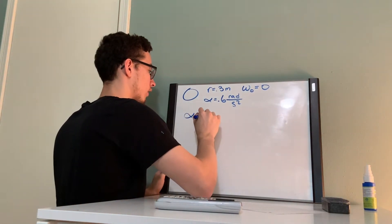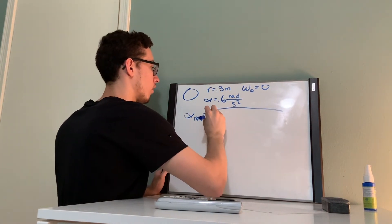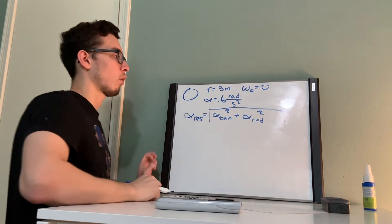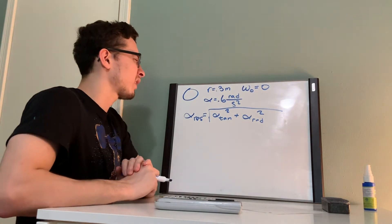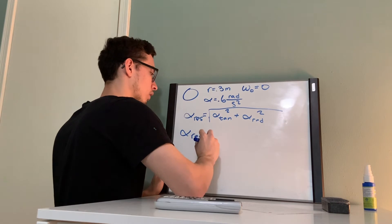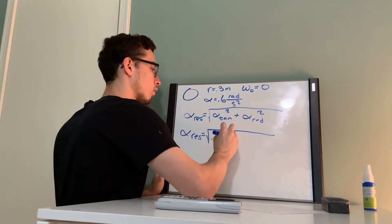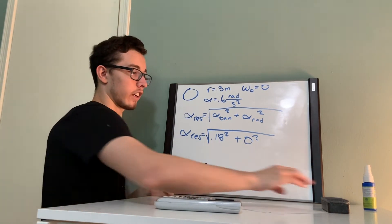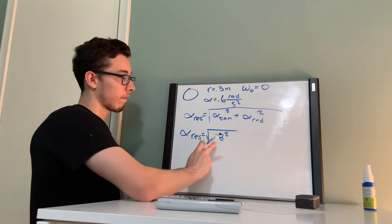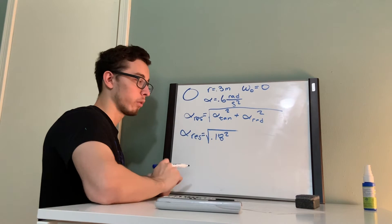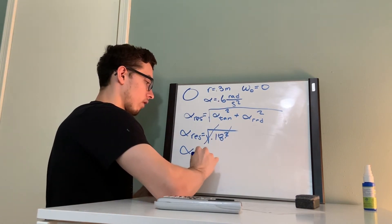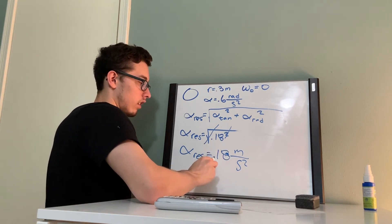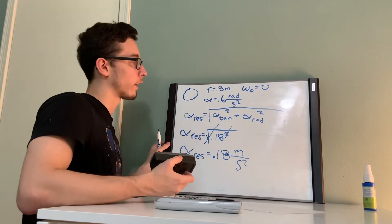Next, we're going to calculate our resultant vector. This is equal to the square root of our tangential acceleration squared plus our radial acceleration squared. Our resultant is equal to the square root of 0.18 squared plus 0 squared. Since 0 squared doesn't contribute, this simplifies: the square root of 0.18 squared just gives us 0.18 meters per second squared.